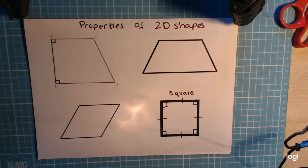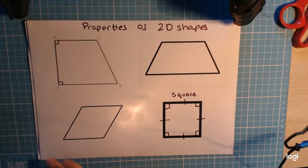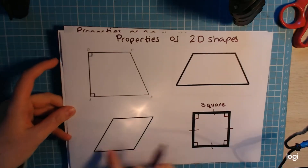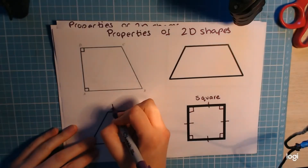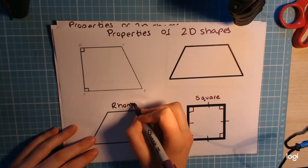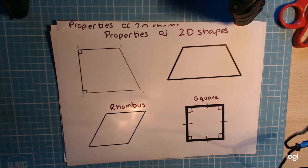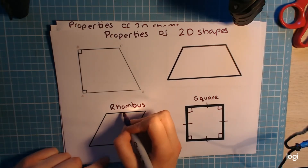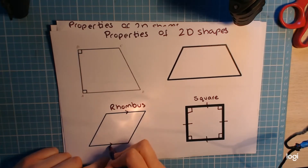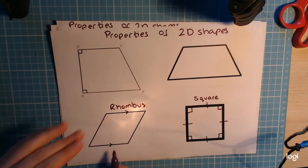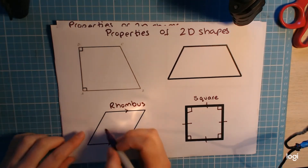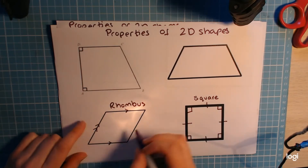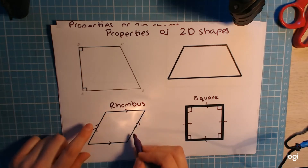Now I'm going to come along to this one here — this is a rhombus. A rhombus has a funny spelling, it's got an 'h' after the 'r'. A rhombus has got two sets of parallel lines. A little arrow indicates parallel, so these sides are parallel to each other — meaning they'll never meet, like train tracks — and these other two sides are also parallel to each other.